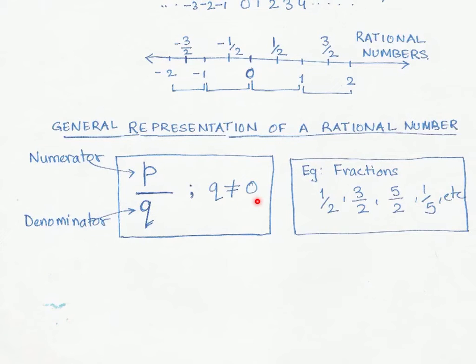You are already aware of these types of numbers. Fractions, for example, are rational numbers. The number on top is known as the numerator—in this case, p is the numerator. The number below is known as the denominator—q is the denominator. The key condition for rational numbers is that q must not be equal to 0.